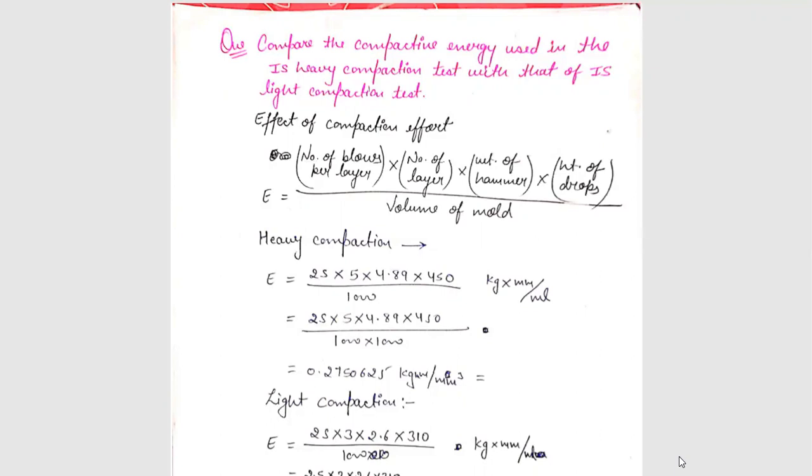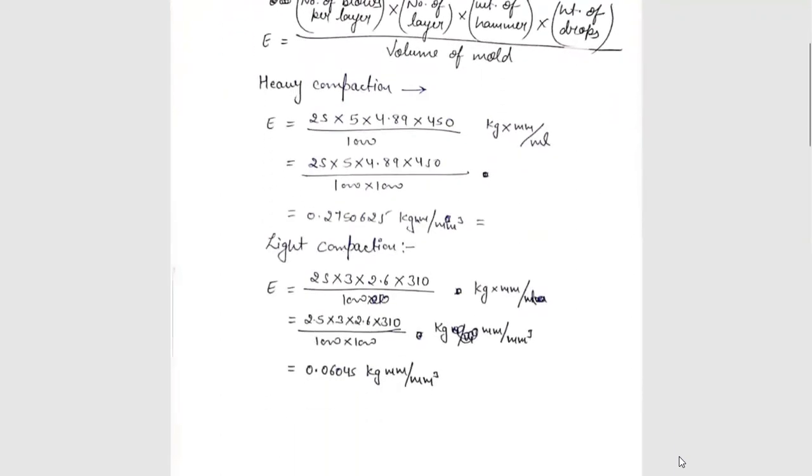Change ml into mm cube and equate it, then the compactive energy will be 0.2750625 kg mm upon mm cube. Next we will compute light compaction energy or standard proctor test. We can also say that.